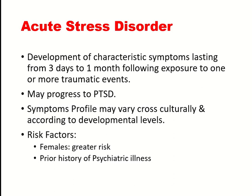Developmental level also affects how symptoms present. In younger children, regression of previously achieved milestones may occur — for example, a child who had started drinking from a cup may revert to bottle feeding, thumb sucking, or bed wetting. Increased fear, irritability, loss of appetite, and clinginess to caregivers can also be symptoms of acute stress disorder. Regarding risk factors, females are generally at higher risk, and anyone with a prior history of psychiatric illness is more predisposed to developing acute stress disorder.